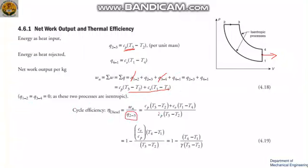For efficiency, we have W_net divided by Q_input, which is Q_23. Substituting the expression for W_net and Q_23 equals Cp·(T3 minus T2), and dividing through, this becomes: efficiency equals 1 minus (Cv/Cp)·(T4 minus T1) divided by (T3 minus T2).